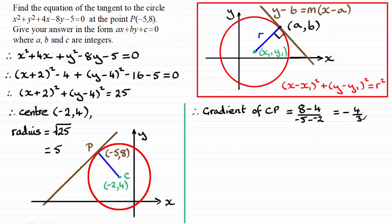Now that we've got the gradient of CP, we get the perpendicular gradient to CP, which will be the gradient of the tangent. And so we take the negative reciprocal of minus 4 thirds. Essentially, what we do is we turn the fraction upside down and switch the sign. So, that's just going to give us 3 quarters. And that will be the gradient of the tangent at P.